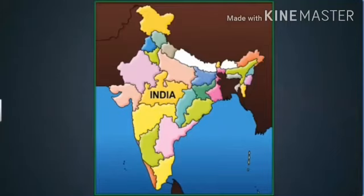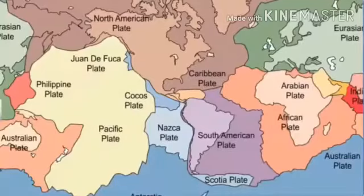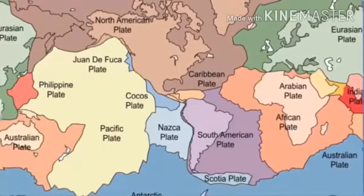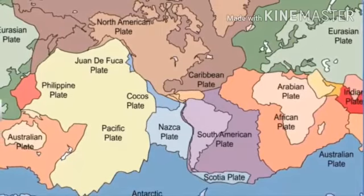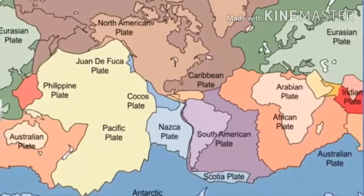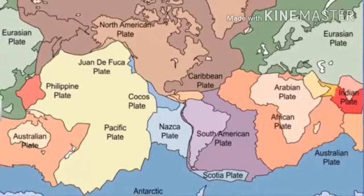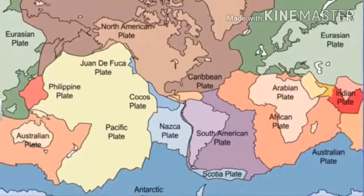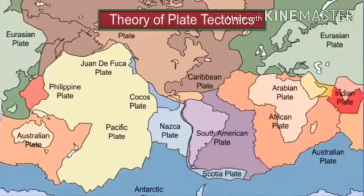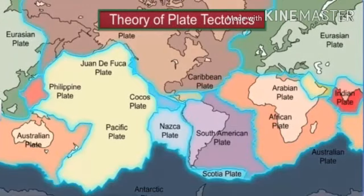No one knows exactly how India was formed. However, scientists have several theories that try to explain the process. One such theory is the theory of plate tectonics. According to this theory, the Earth's crust is formed from seven major and some minor plates.